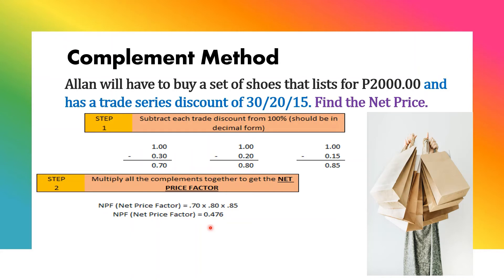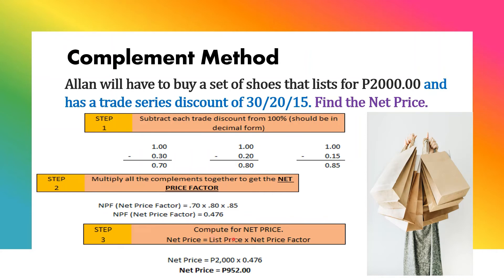For Step 3, compute the net price using the formula: net price equals list price times net price factor. Our list price is 2,000 and the net price factor is 0.476, so the net price is 952 pesos — the same answer as the step-by-step method.